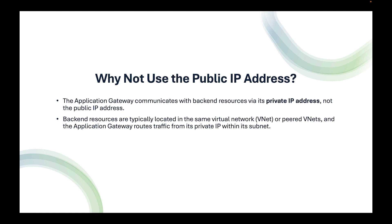Some of you may be thinking: why are you adding the internal network versus the public IP address? The public IP address for the application gateway is for external users — people get to it via a custom DNS name like mywebsite.com. But you wouldn't associate the public IP in the NSG rule because that opens you up. You want the internal address for the app gateway subnet, since the application gateway communicates with back-end resources via its private IP. Back-end resources are typically in the same virtual network or a peered network.